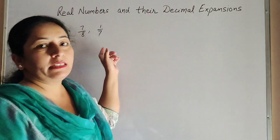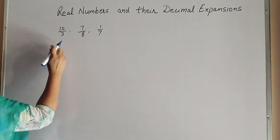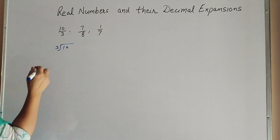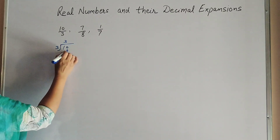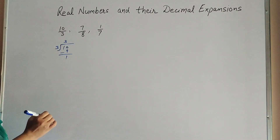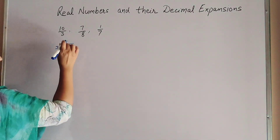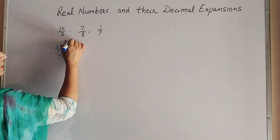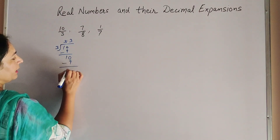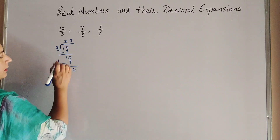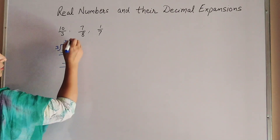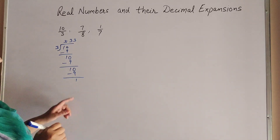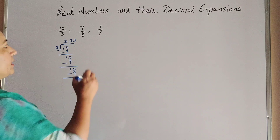The first number is 10/3, meaning 10 divided by 3. Using long division: 3 threes are 9, 10 minus 9 gives 1. We put a decimal point and add 0. Again, 3 threes are 9, 10 minus 9 gives 1. This repeats — the remainder is always 1. So we use the long division method, and the remainder here is 1.